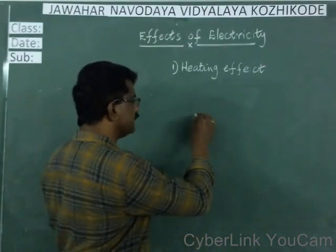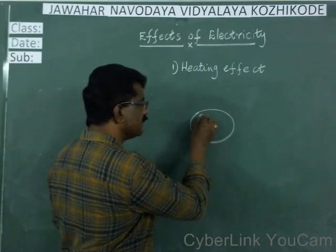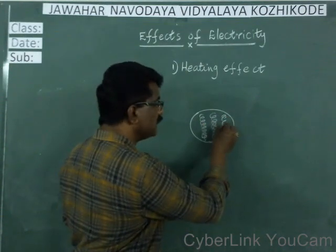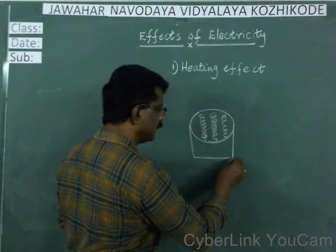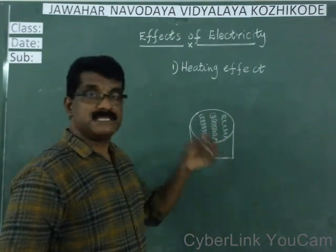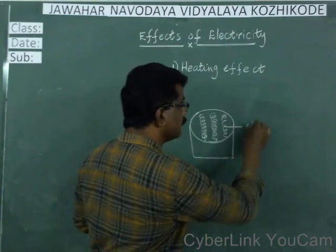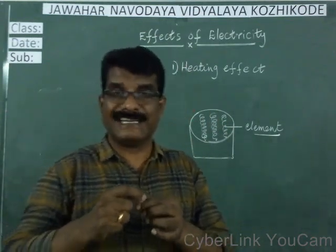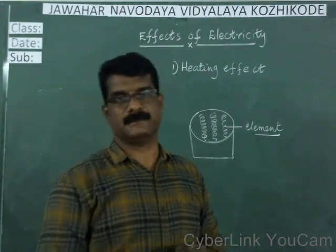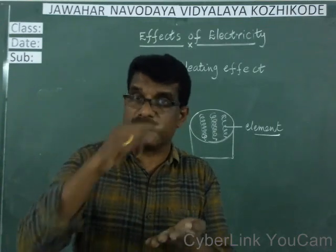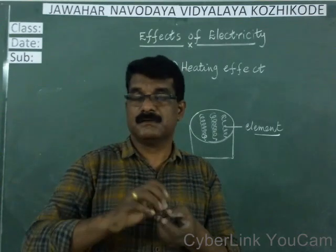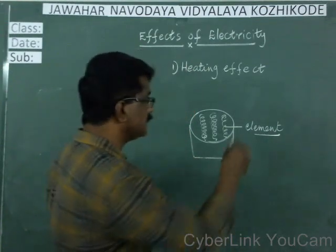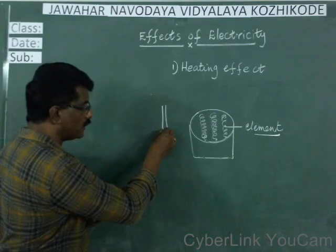In room heaters we can see a coil of thin wires are used. The metallic wire which gets heated when electricity is passed is known as the element. Similarly, in an iron box also there are spring-like structures inside - a heating element is there inside. Inside the hair dryer, a heating element is there.